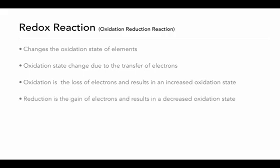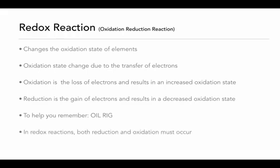The reduction part of a redox reaction is the opposite — an atom gains electrons going from reactants to products, resulting in a negative change in the oxidation state. One of the easiest ways to remember the difference is the mnemonic OIL RIG: OIL stands for oxidation is loss of electrons, and RIG stands for reduction is gain of electrons. In a redox reaction, both of these have to occur. If something is gaining electrons, there has to be a source — the atom losing the electrons.